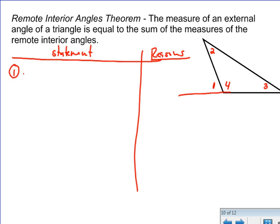So what we can do is we can say m∠1 + m∠4 = 180°, and we know that because linear pairs sum to 180.